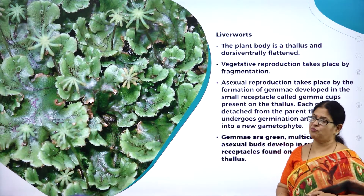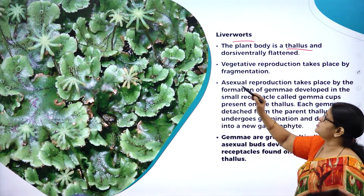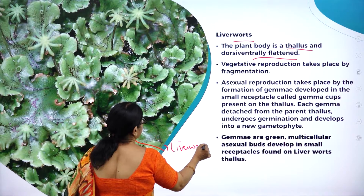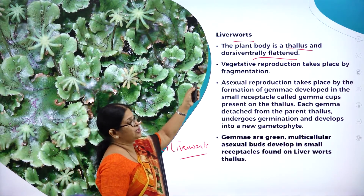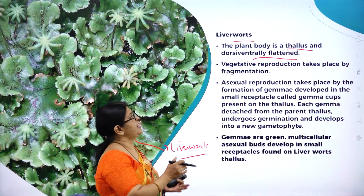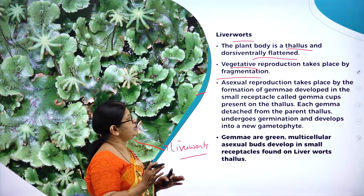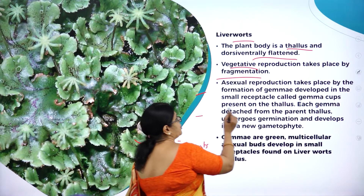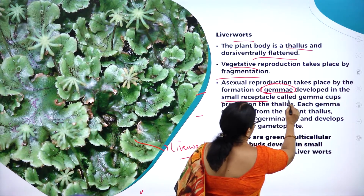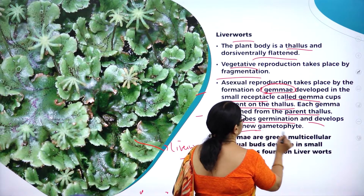Now let us understand liverworts. The plant body of liverworts is a thallus that is dorsiventrally flattened - here you can see a picture of liverworts showing the dorsal and ventral surfaces. Vegetative reproduction takes place by fragmentation, where each piece can develop into a new plant. Asexual reproduction takes place by formation of gemmae, which are like internal buds developed in small receptacles called gemma cups present on the thallus.